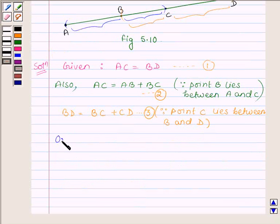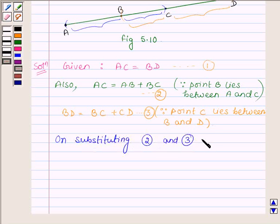And now, on substituting 2 and 3 in 1, we get in place of AC we will write AB plus BC.